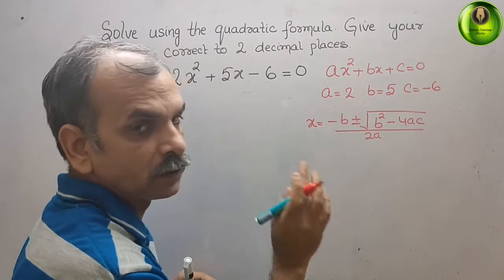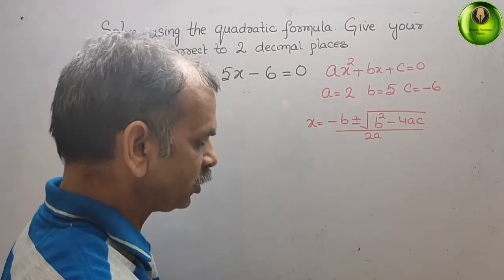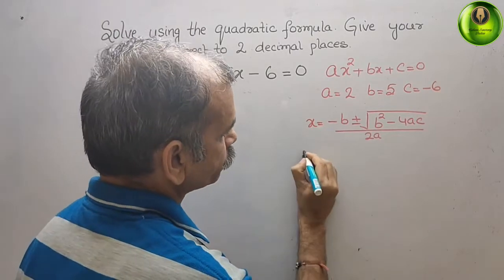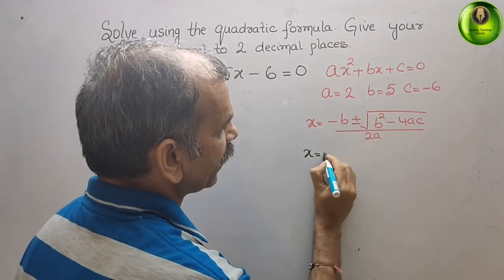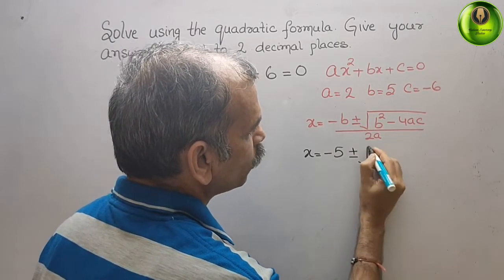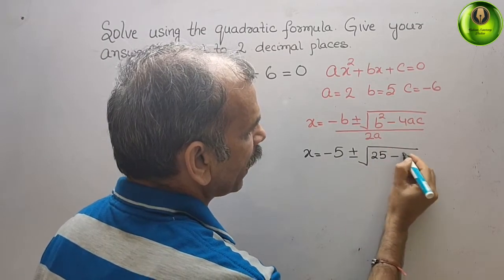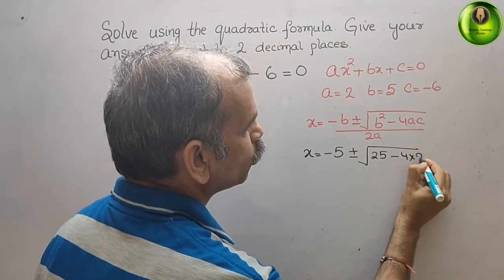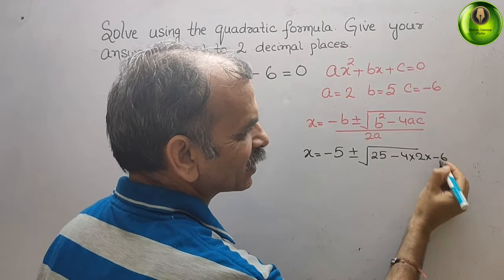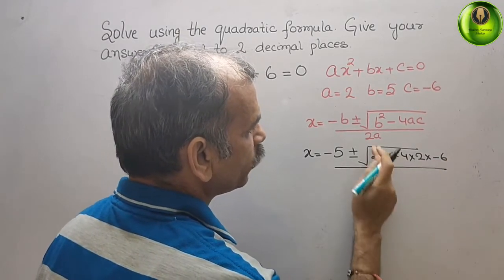Now solve this. What we will get? We get x = -b, that means -5 ± √(b² is 25 - 4 × 2 × -6) / (2 × a is 2).